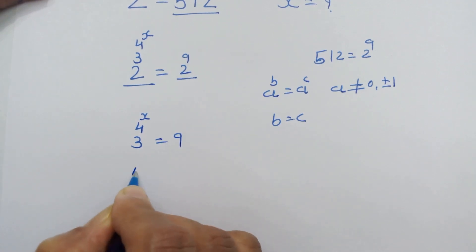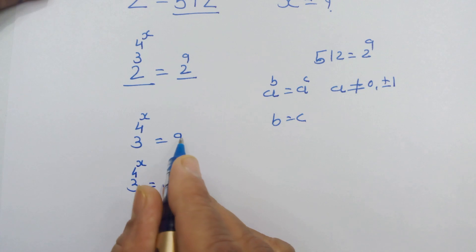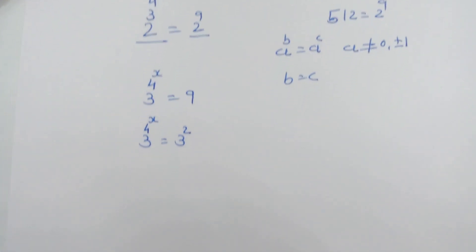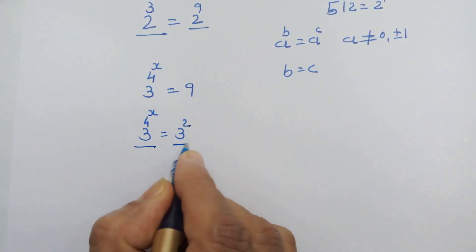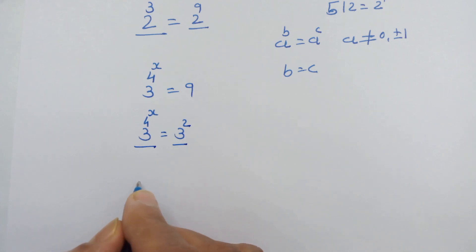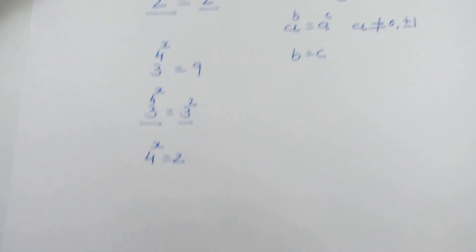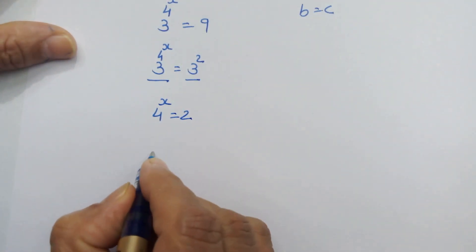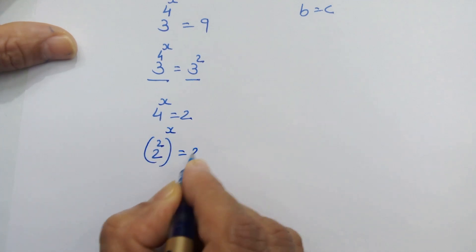Now, 3 raised to 4 raised to x equals 3 squared, because 9 is 3 squared. Again we have the same base, so we can equate the exponents: 4 raised to x equals 2. Since 4 is 2 squared, we have 2 squared raised to x equals 2.